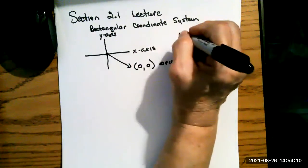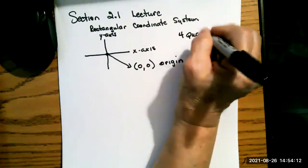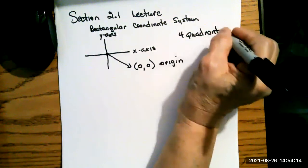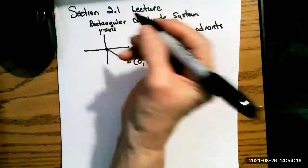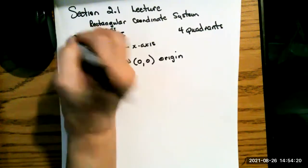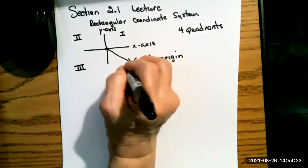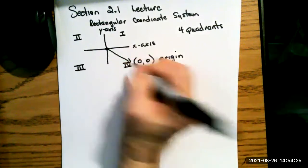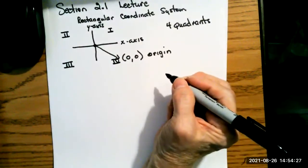There are four quadrants, so we have them in counter-clockwise fashion here, one, two, three, four, and you use roman numerals to designate quadrants.